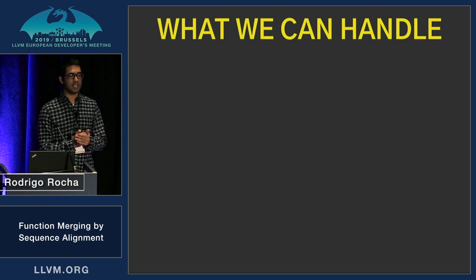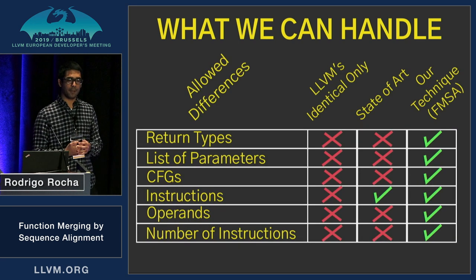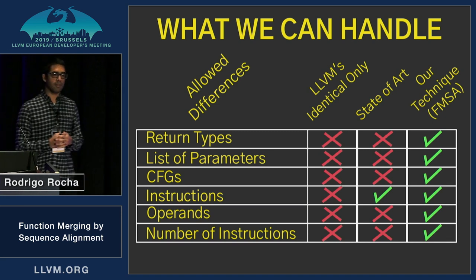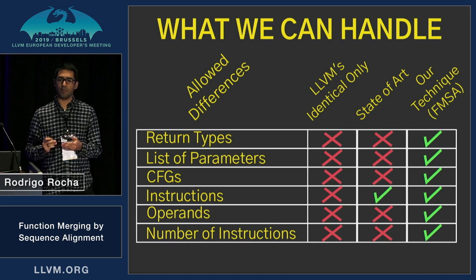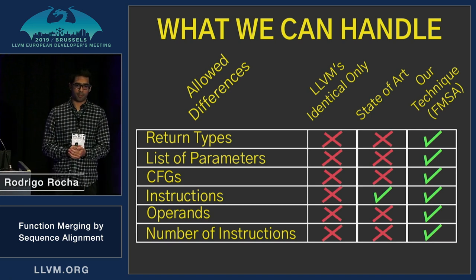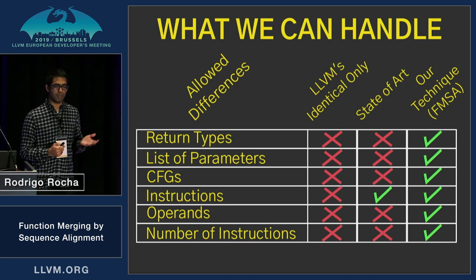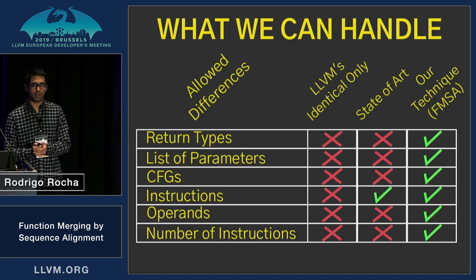So let's see a summary of how it compares with the other techniques. Yes, we can handle return types — if we have two different return types, say an integer and a double, we can use a union-like approach. And I showed you integer with void as well. So list of parameters we can handle, CFGs, instructions, operands, and so on.